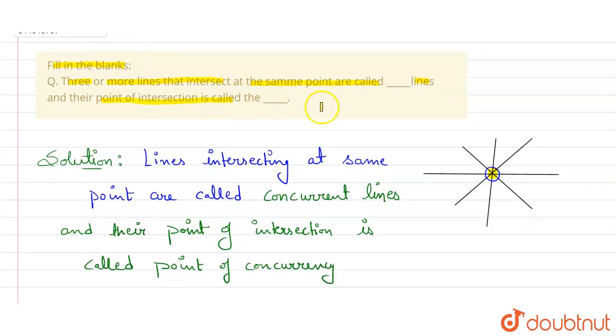So our final answers are: in the first space we write concurrent lines, and in the second space we write point of concurrency.